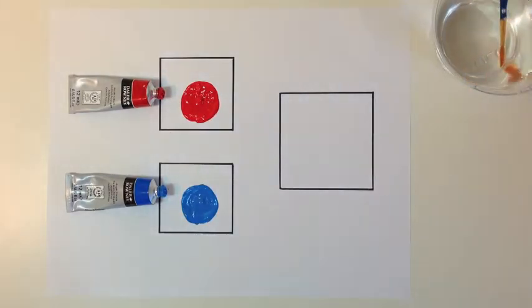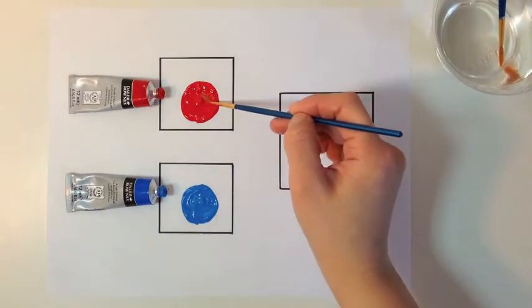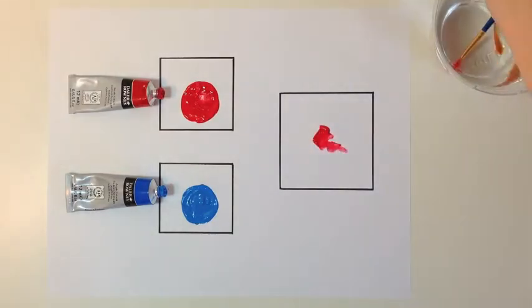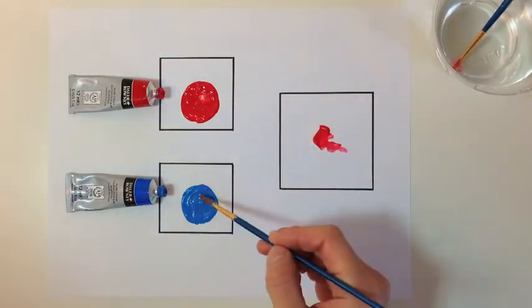When we add the primary colors of red and blue together, we will get purple.